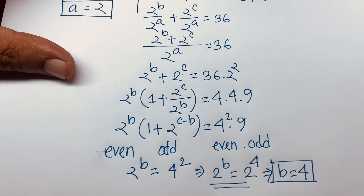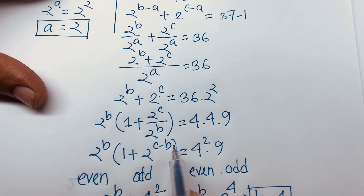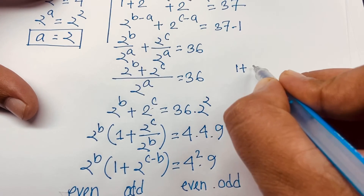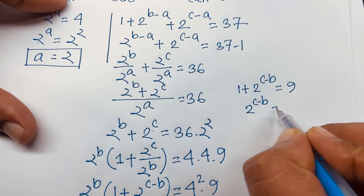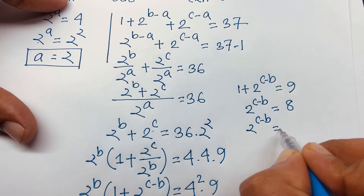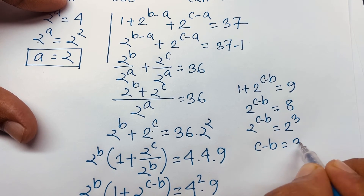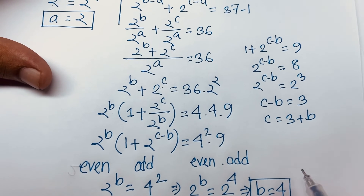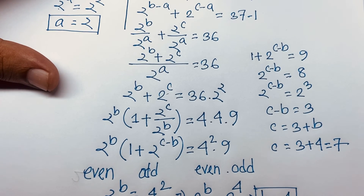Now we find c. From 1 + 2^(c−b) = 9, we get 2^(c−b) = 8 = 2^3. Since the bases are the same, c − b = 3. Since b = 4, we have c = 3 + 4 = 7.